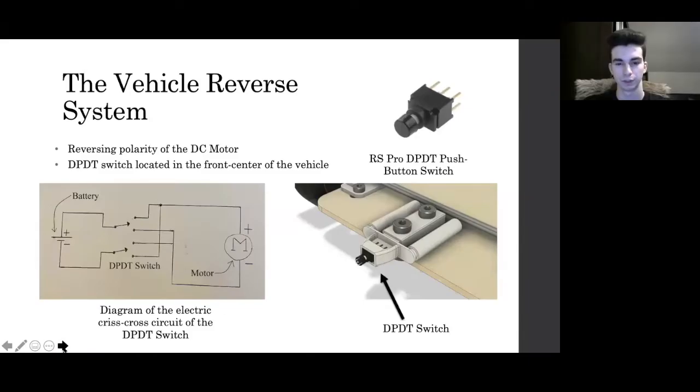In order to bring the vehicle back from the wall, we decided on switching the polarity of the motor. This will be done by using a DPDT type button switch located in the front of our model, which will be activated once the vehicle collides with the wall.